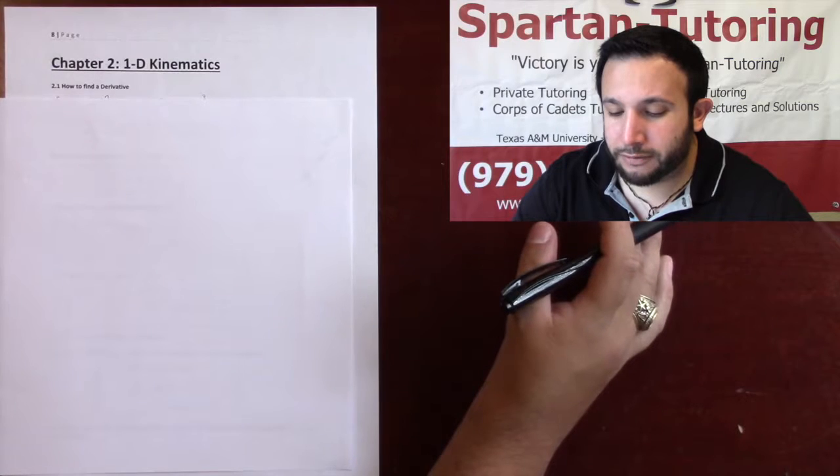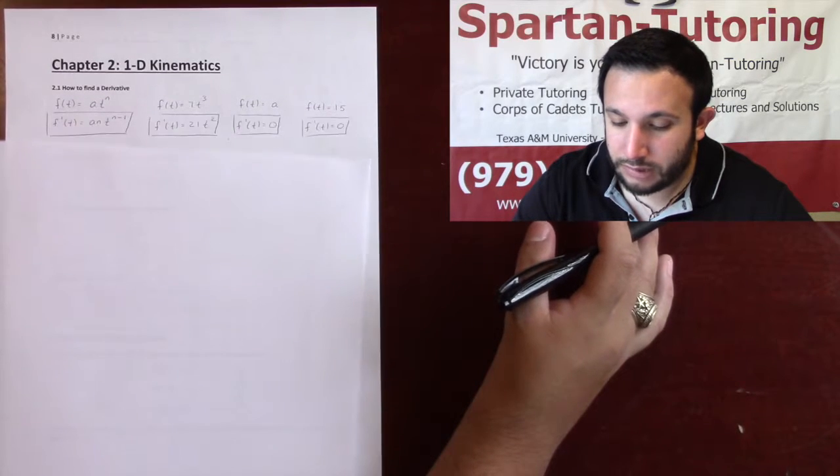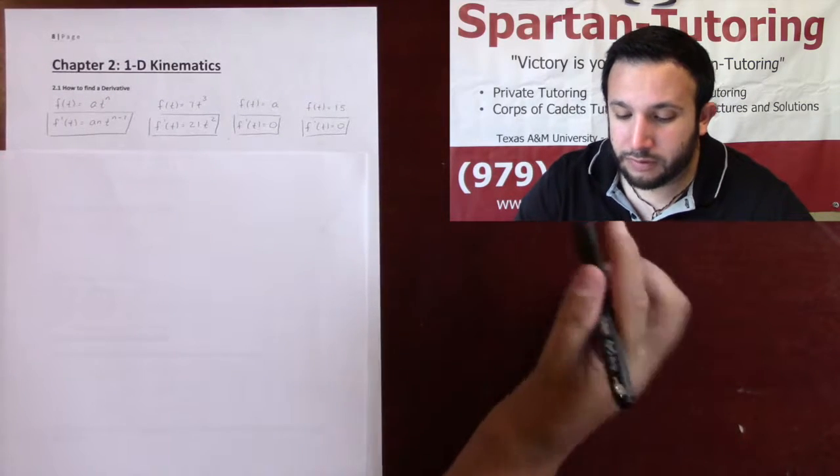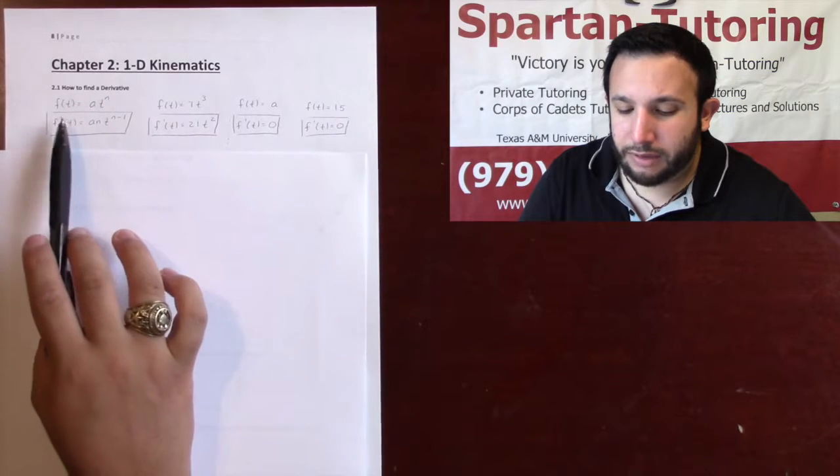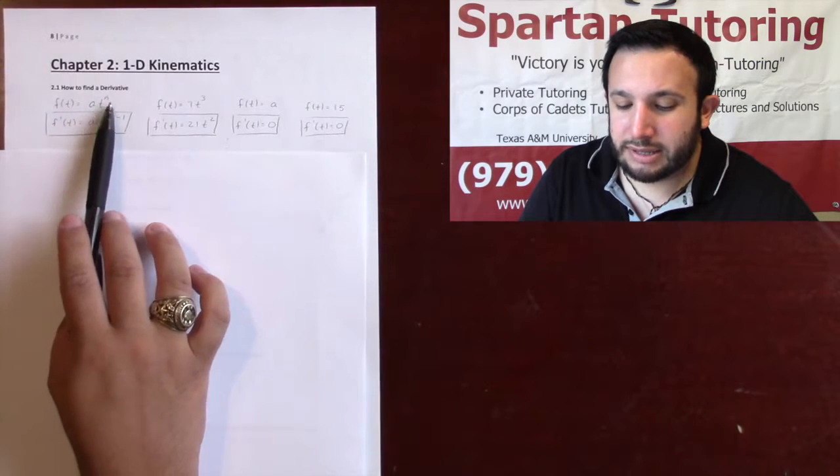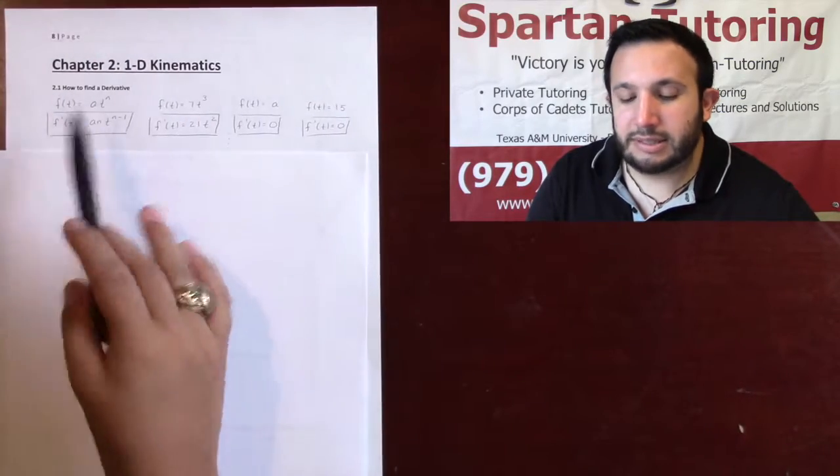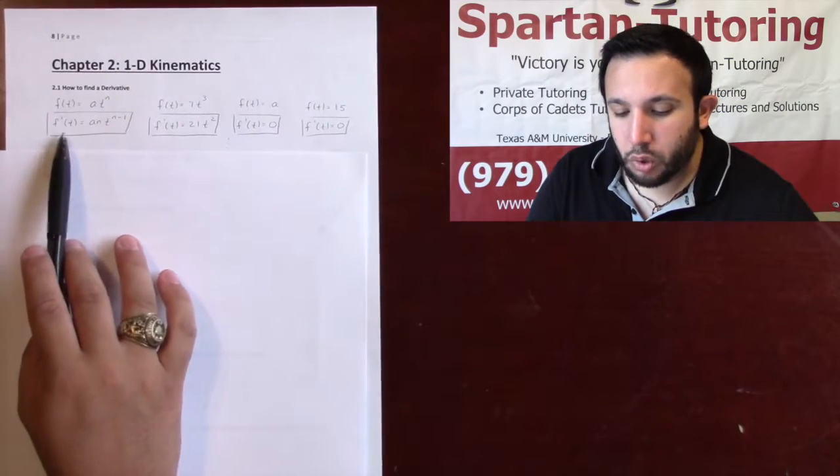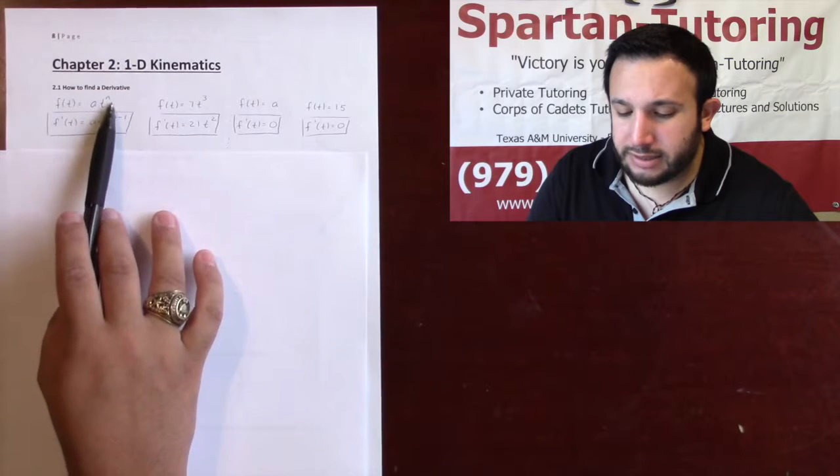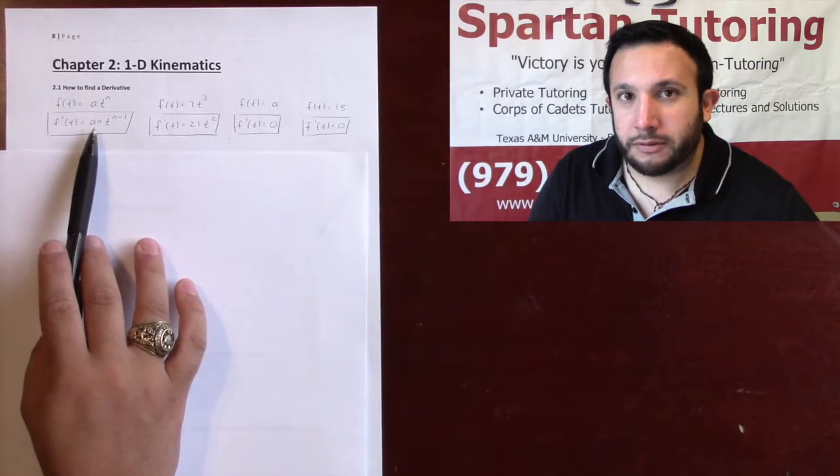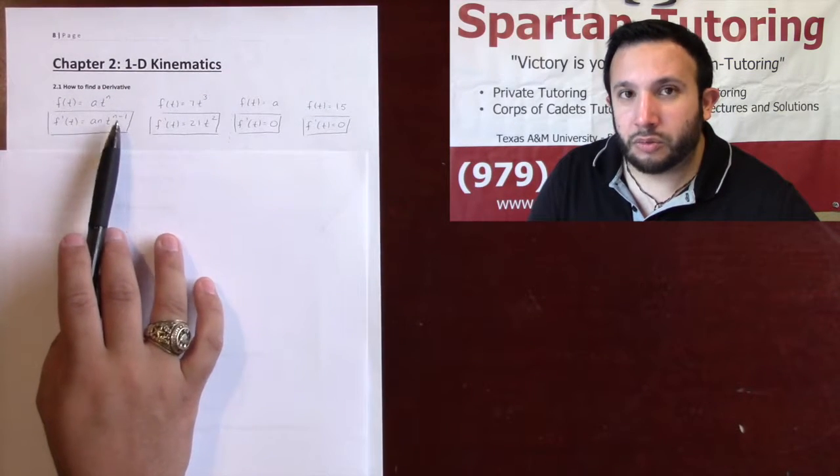Let's first talk about how to find a derivative. The way that you find a derivative is, let's say you're given some f of t, and that's a t to the n, where a and n are just some constants and t is your variable. What you're going to do is you're going to take this n value, multiply it in front, and then subtract one from the exponent.